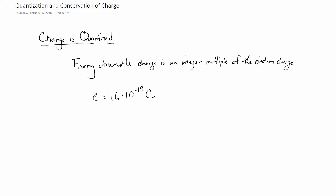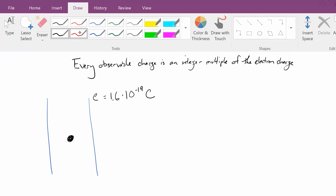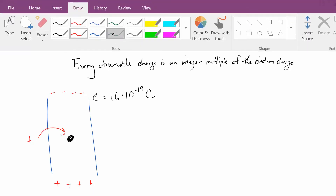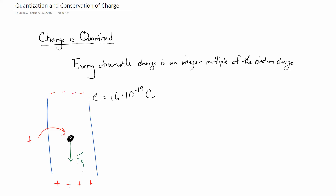This is what Millikan demonstrated in his oil drop experiment. Basically, he had a setup where a droplet of oil, which carried some electric charge, was placed in a region of space between basically two poles of a battery. This thing has some positive charge on it, so we get gravity working downwards and we get this electric force working upwards. And they could get these oil drops to hover.